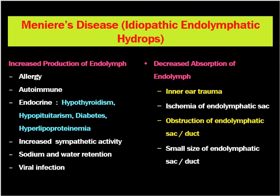Coming to etiology of Meniere's disease: Meniere's disease is idiopathic endolymphatic hydrops, so the condition is idiopathic. Either increased production of endolymph or decreased reabsorption of endolymph through the endolymphatic sac and duct leads to hydrops.